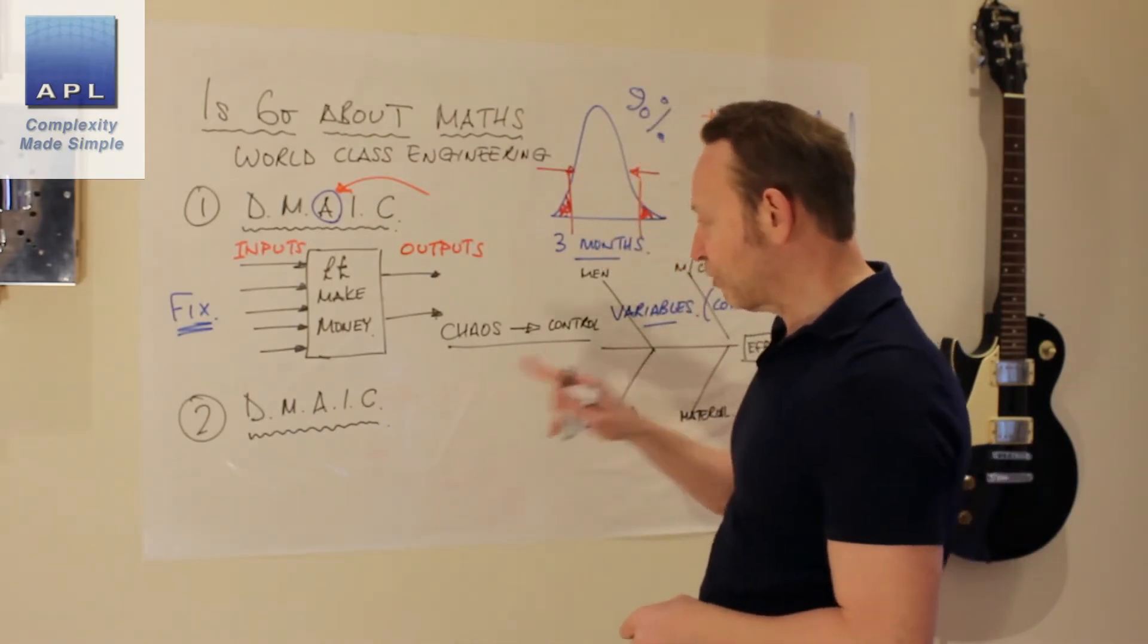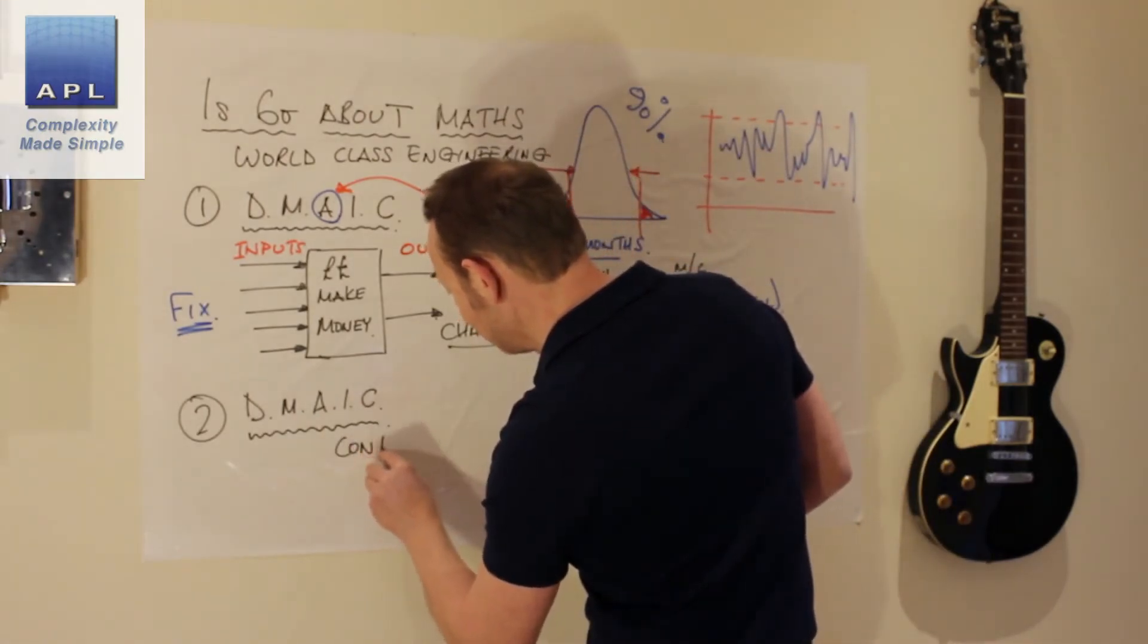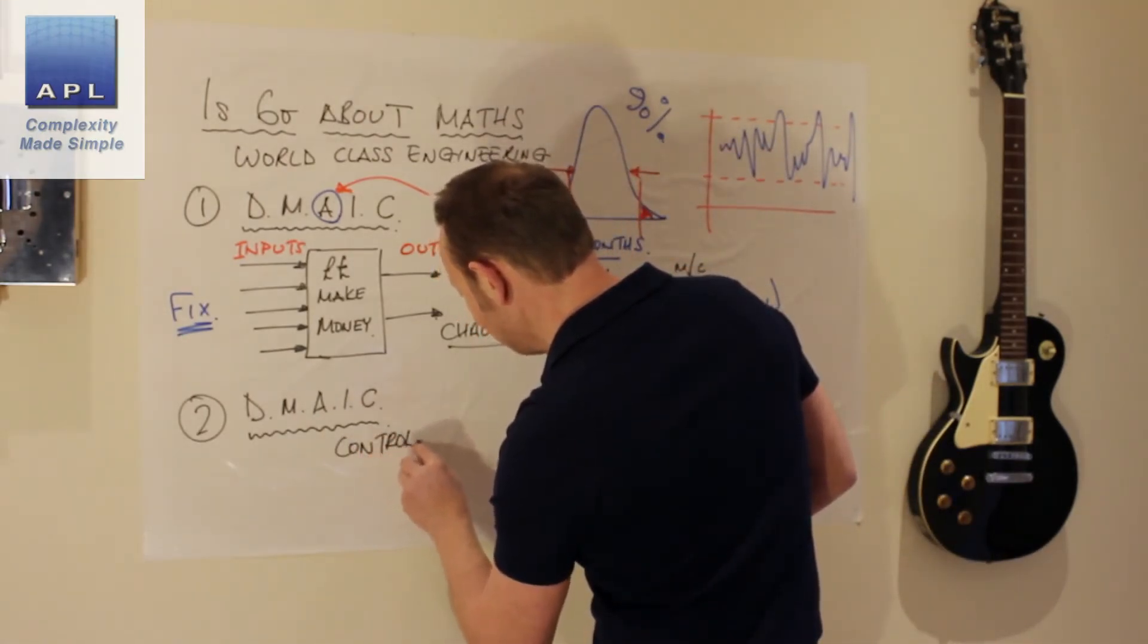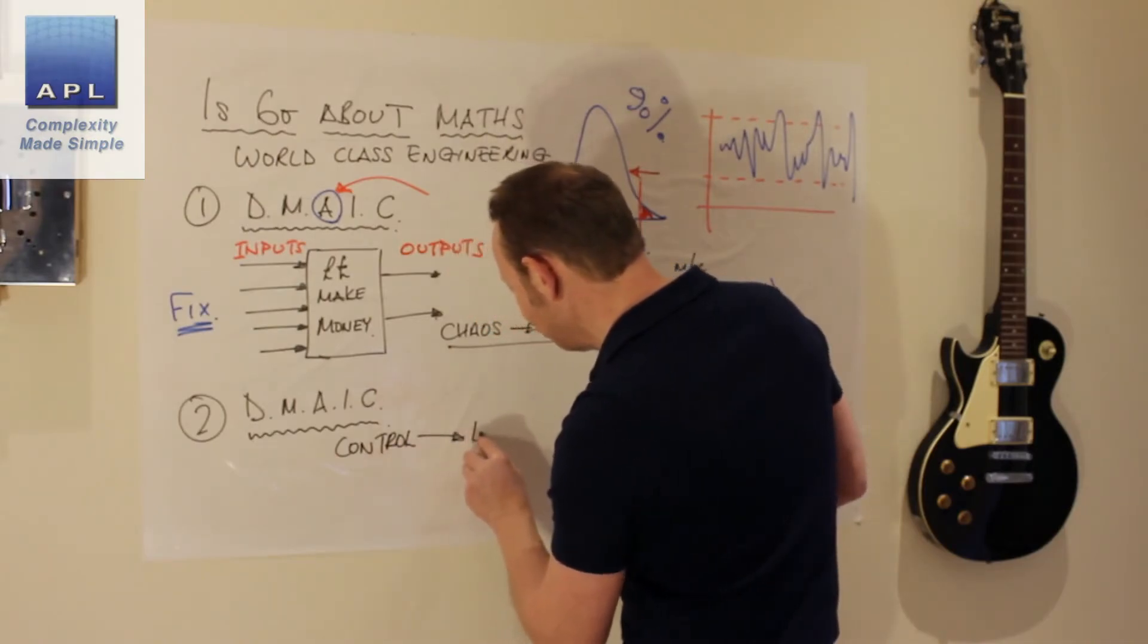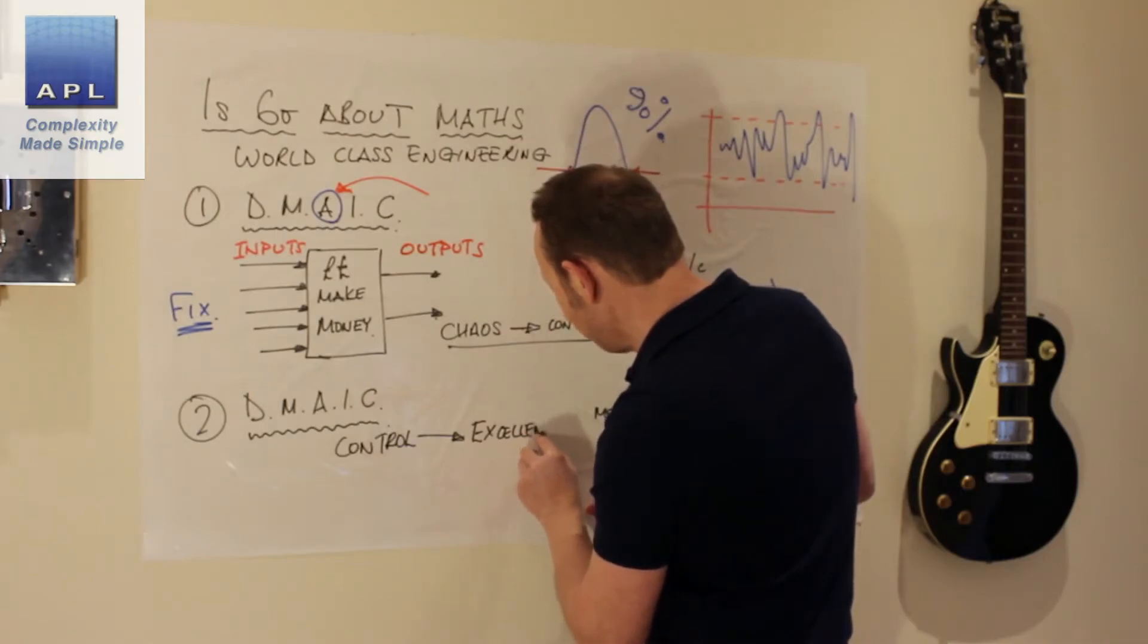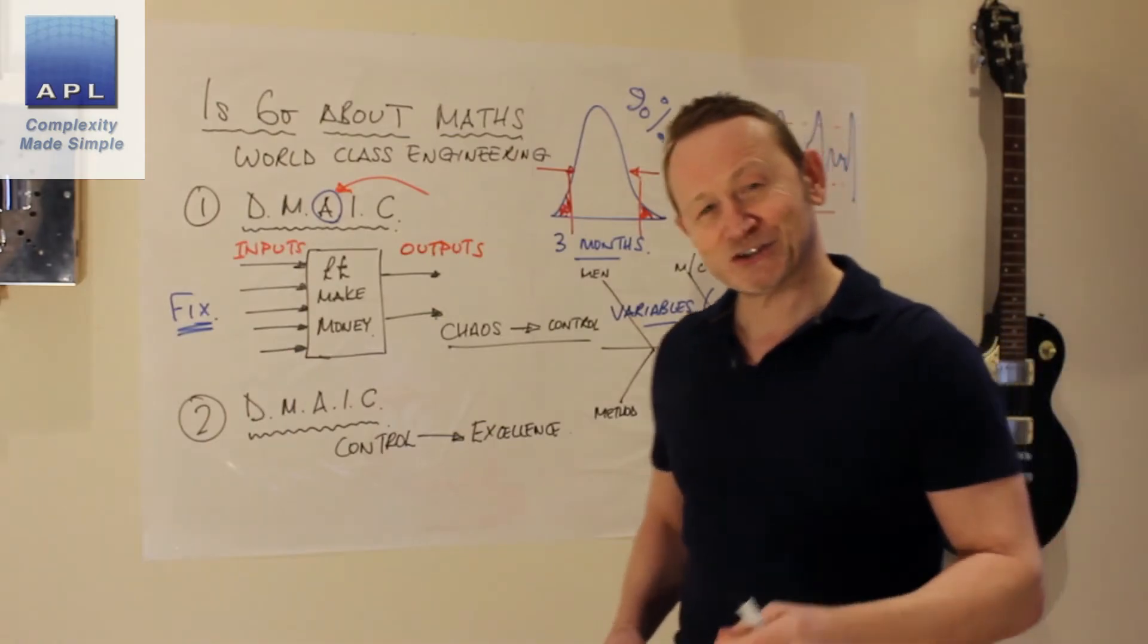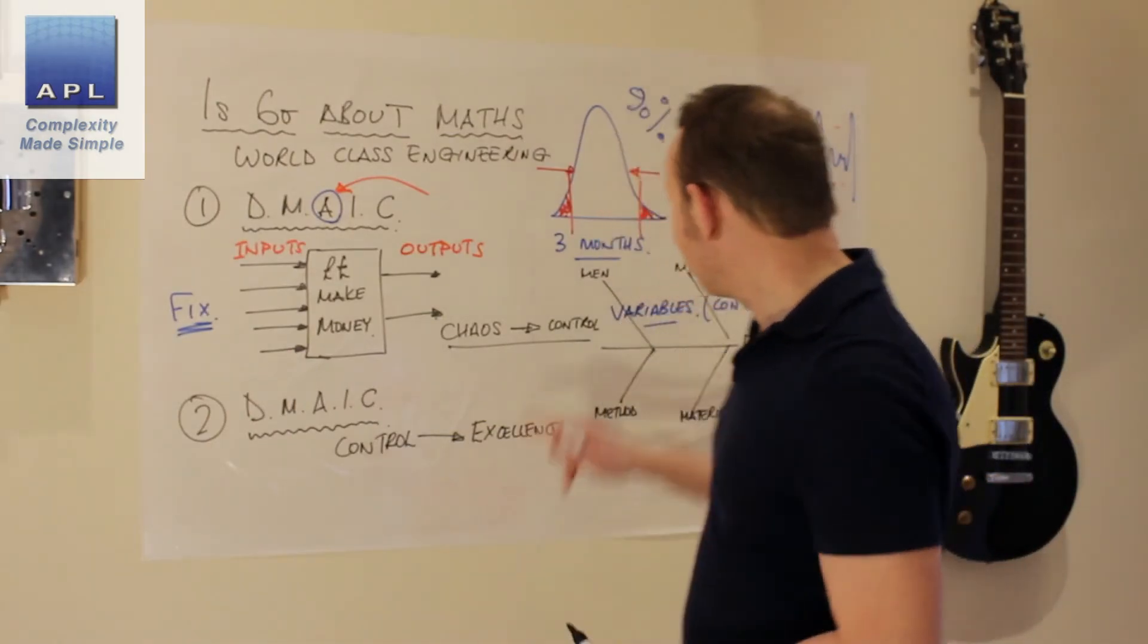So let's take a look at this thing. Now, this thing is not about chaos to control. This thing is about control to excellence. So this is domain two. Now this control to excellence. Just occasionally, I do get projects that go straight to this level, but it's very rare. Control to excellence, on the other hand, is a different problem.